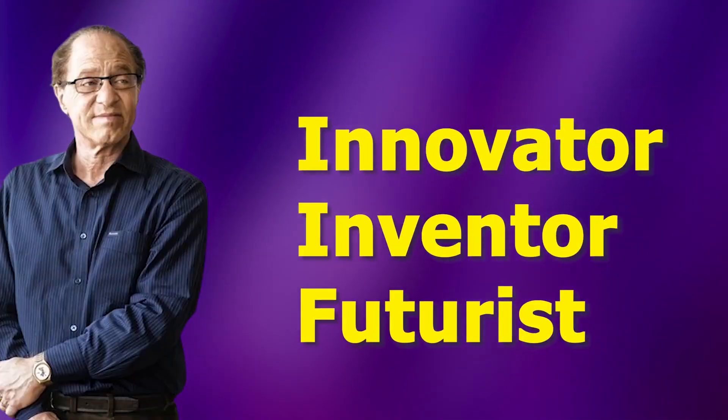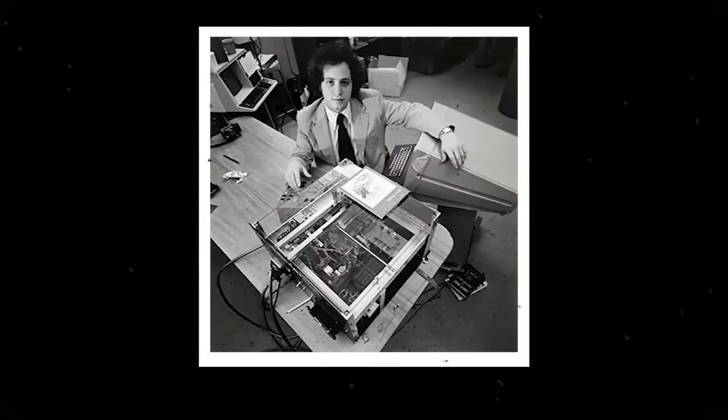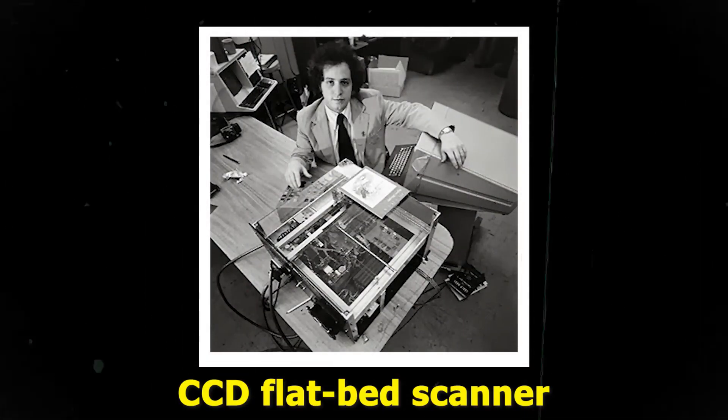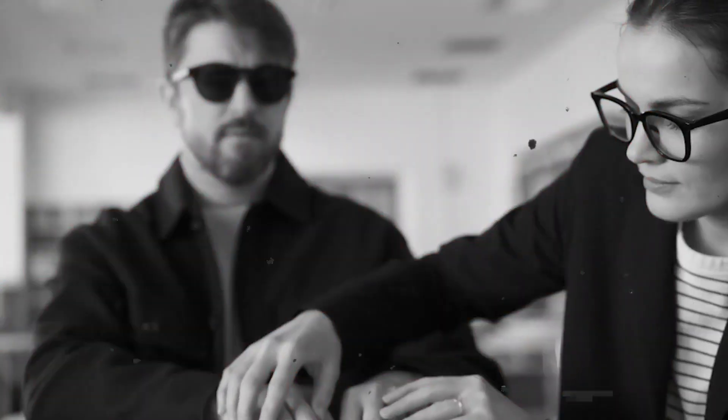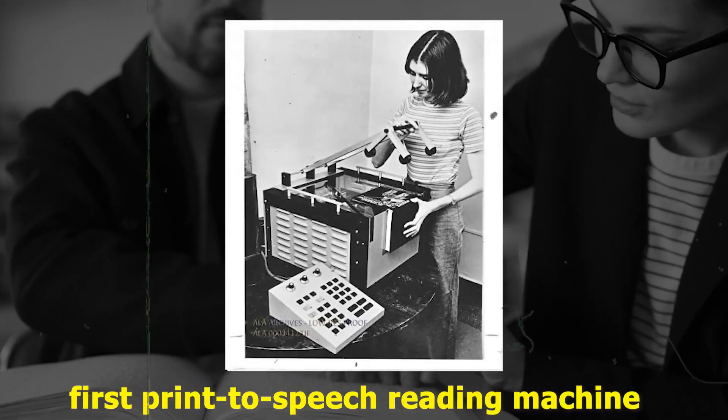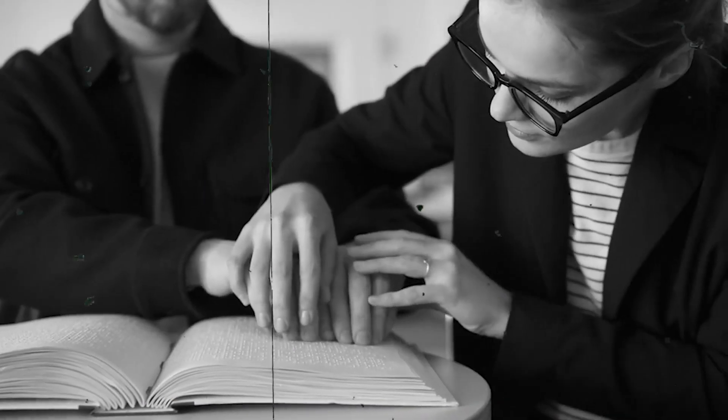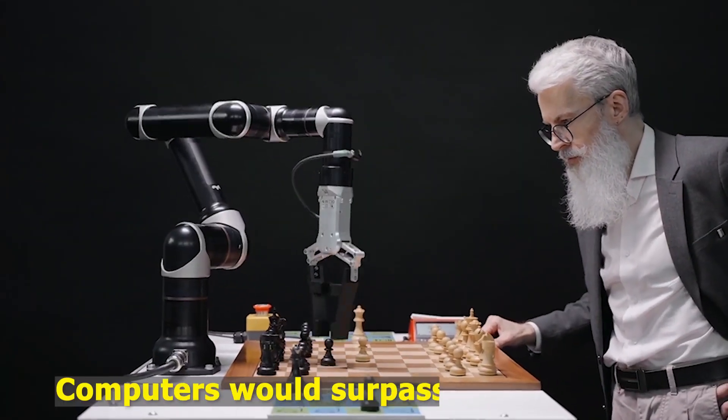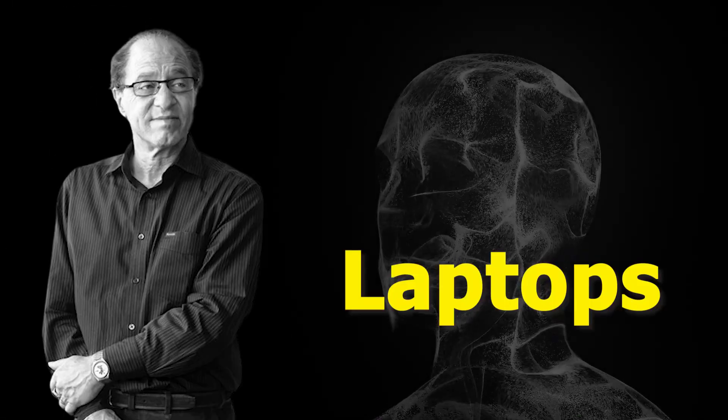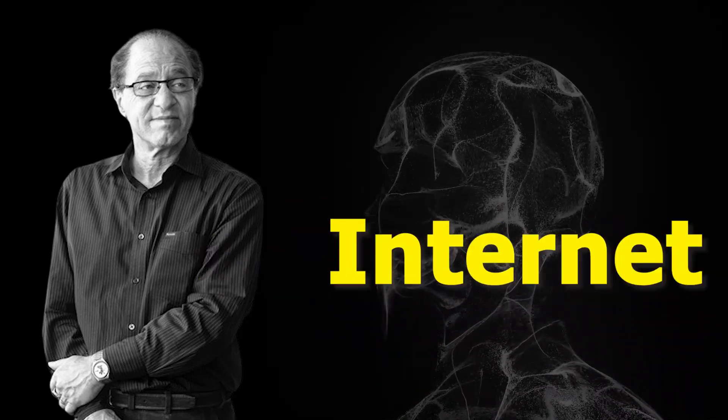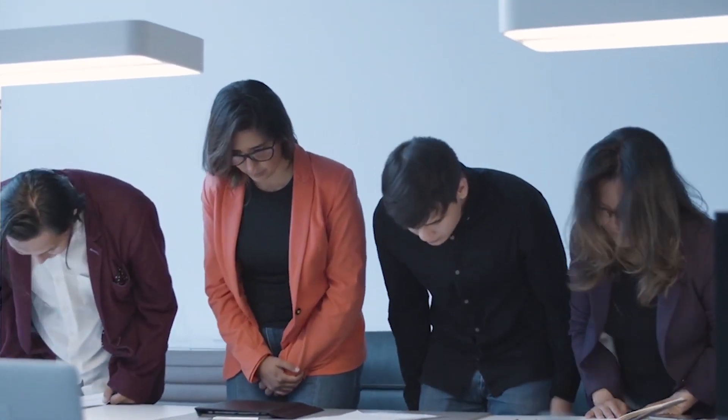Innovator, inventor, and futurist Ray Kurzweil's accomplishments are remarkable. He created the first CCD flatbed scanner, which changed how we scan documents. He also developed the first omnifont optical character recognition, making it easier to convert printed text into digital form. Additionally, he invented the first print-to-speech reading machine for the blind and the first text-to-speech synthesizer, helping people with visual impairments access written information. Kurzweil's predictions have been surprisingly accurate. He foresaw that computers would surpass humans in chess, which happened in 1997 when IBM's Deep Blue defeated Garry Kasparov. He also predicted the widespread use of laptops, smartphones, wireless technology, and the internet, all of which are now integral parts of daily life.